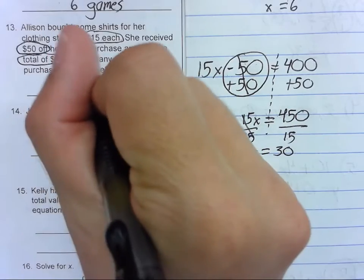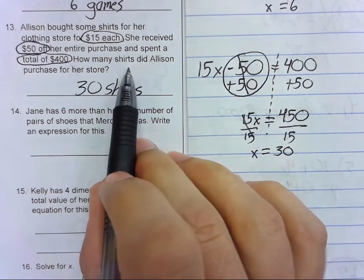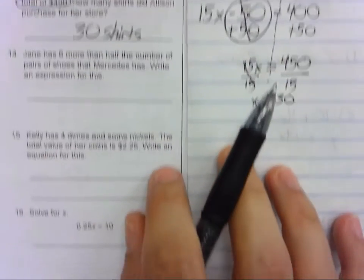x equals 30. So 30 shirts. Again, we needed to get a whole number because you're not going to buy half of a shirt. Problem 14.